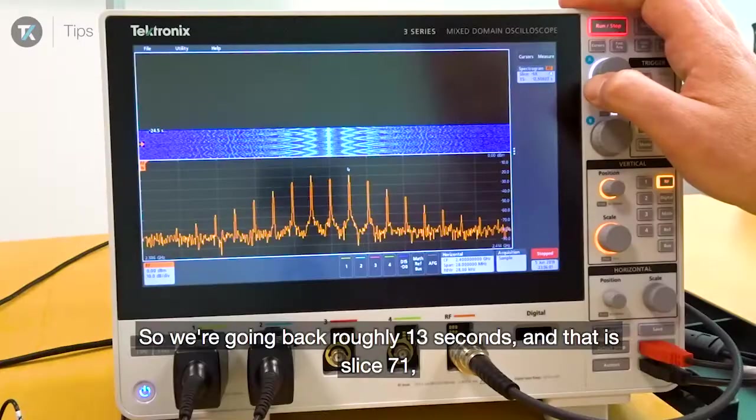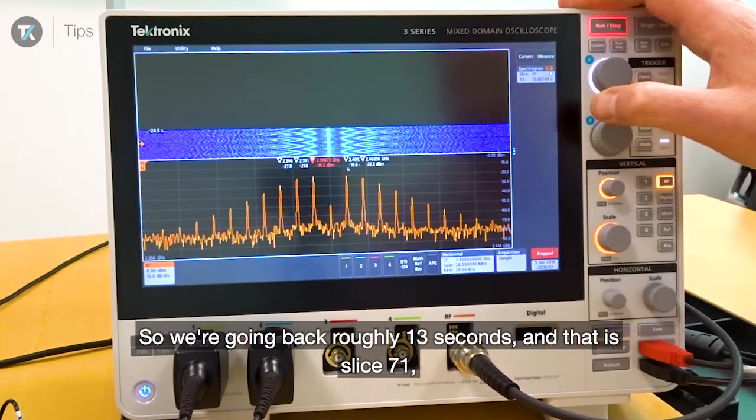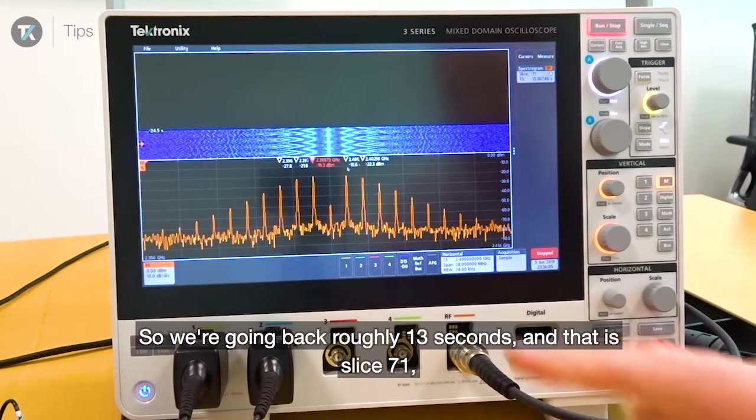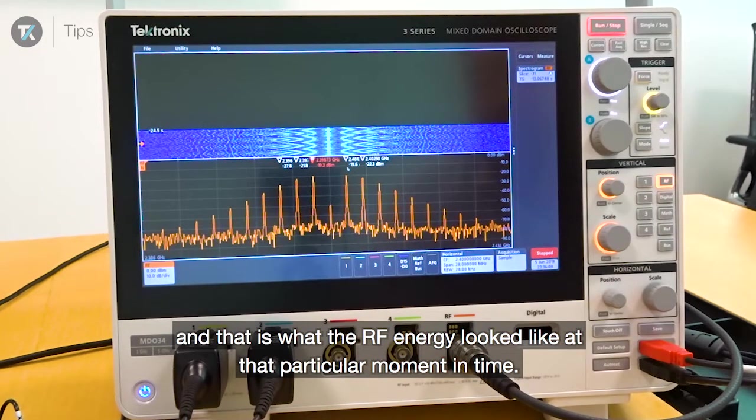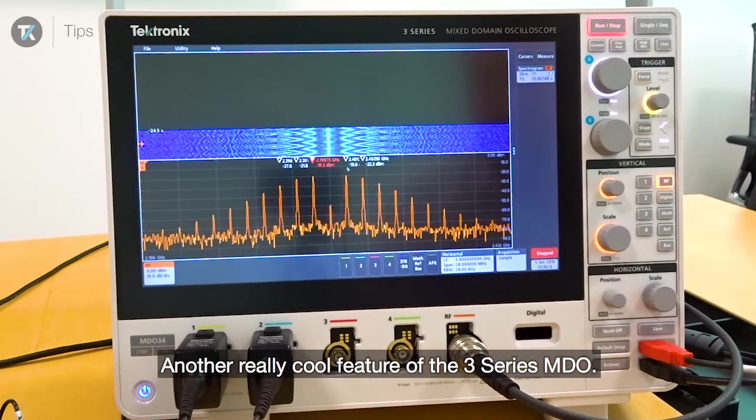If you look here, it gives me the slice information and also the time. We're going back roughly 13 seconds, and that's slice 71. That is what the RF energy looked like at that particular moment in time. Another really cool feature of the 3 Series MDO...